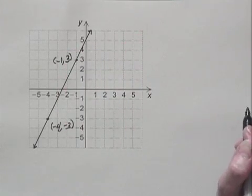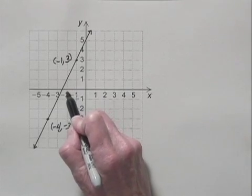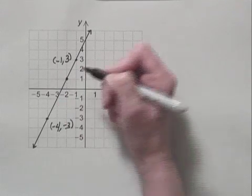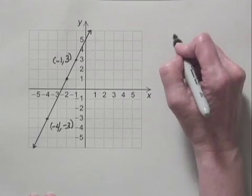Now we're asked to find another point that lies on the line, and it looks like to me that (-2, 1) is a point on the line, right here. Let's see if it is indeed a solution of that equation.